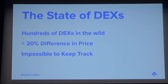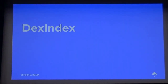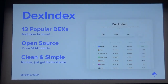On average there can be more than a 20% difference in price across DEXes. This makes it very hard to keep track of which DEX has the best price for a given amount of token. So that's why we decided to build Dex Index. Dex Index is a DEX price aggregator that fetches quotes from 13 popular DEXes currently.